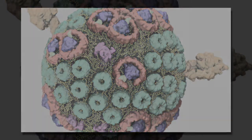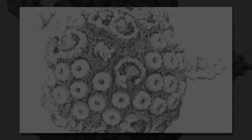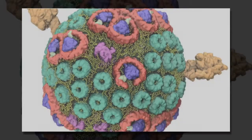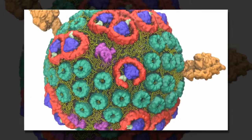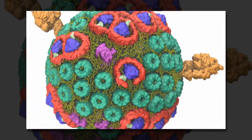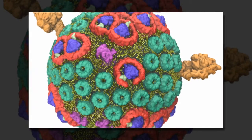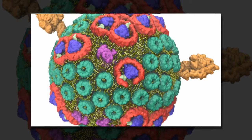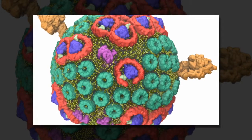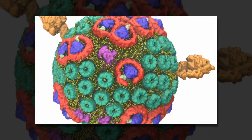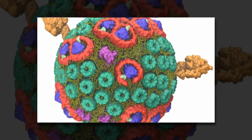For that reason, Klaus Schulten of the University of Illinois at Urbana-Champaign targeted the chromatophore to study photosynthesis at the atomic level.